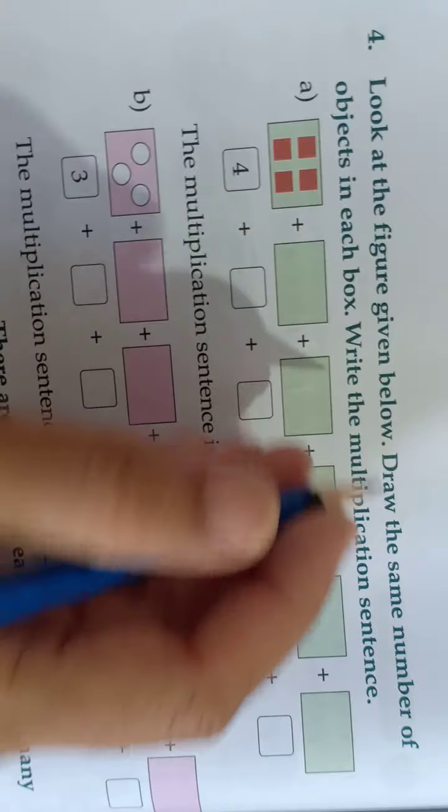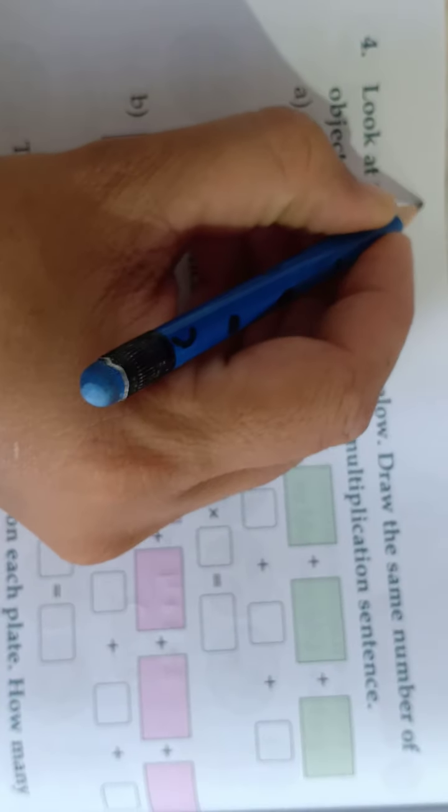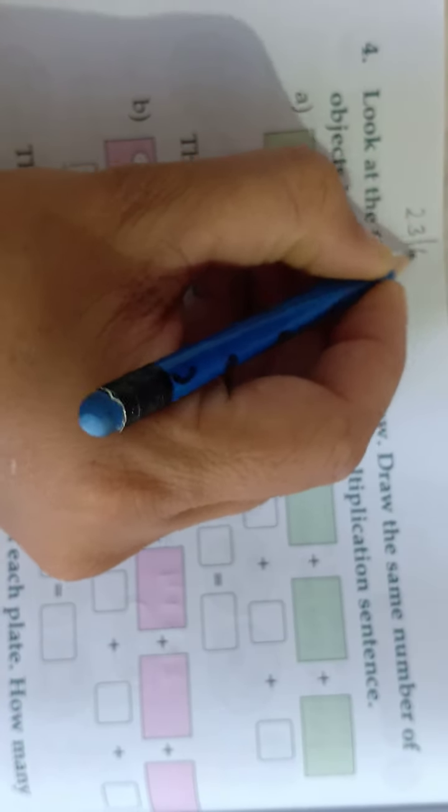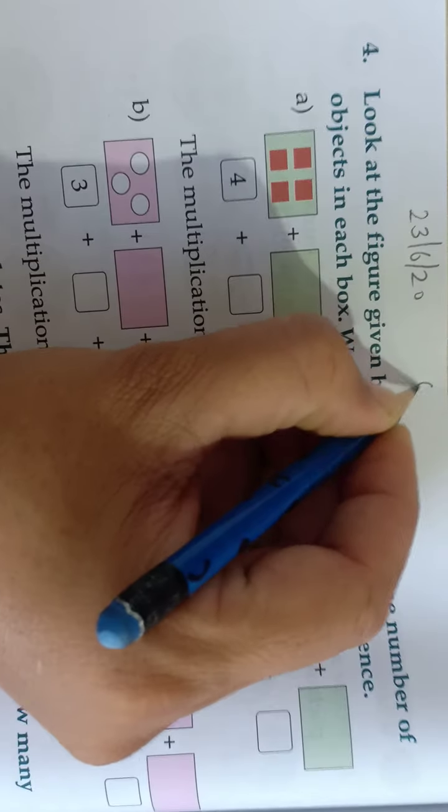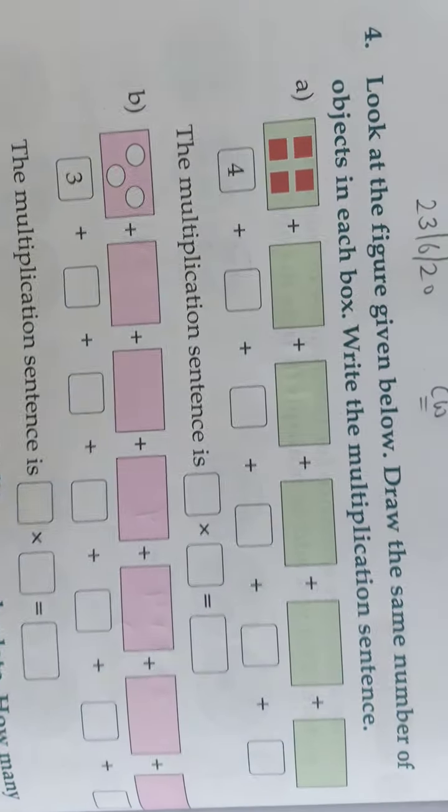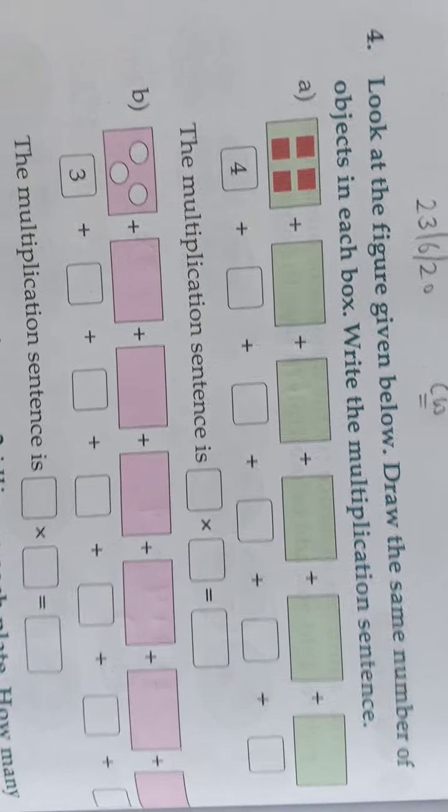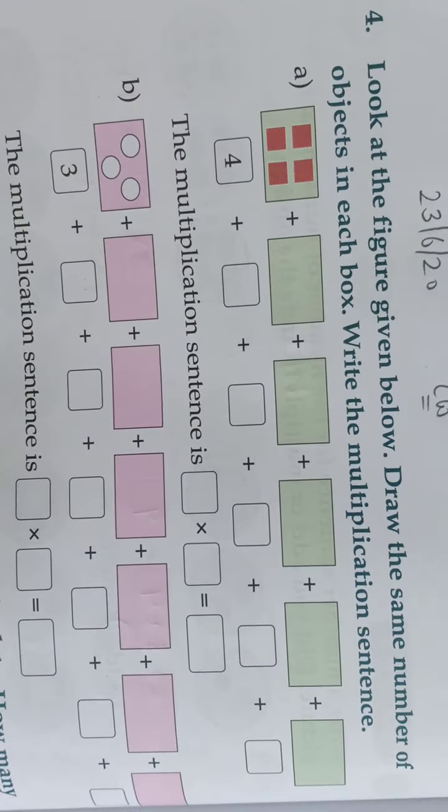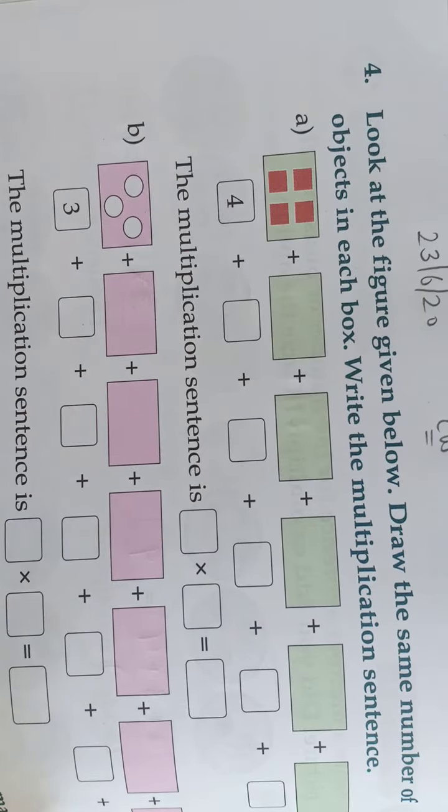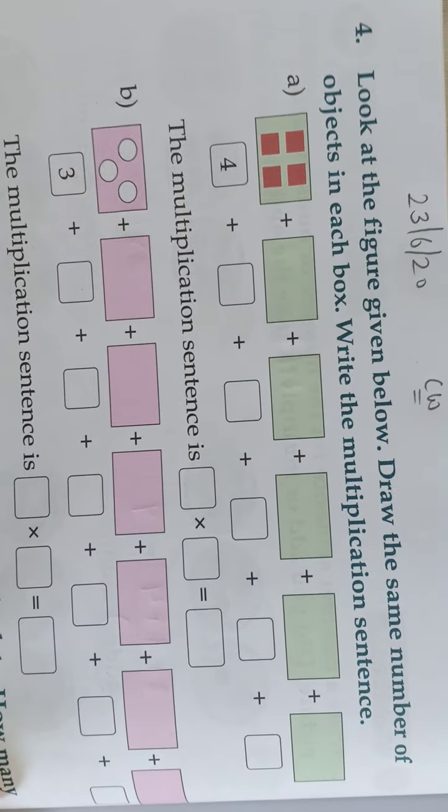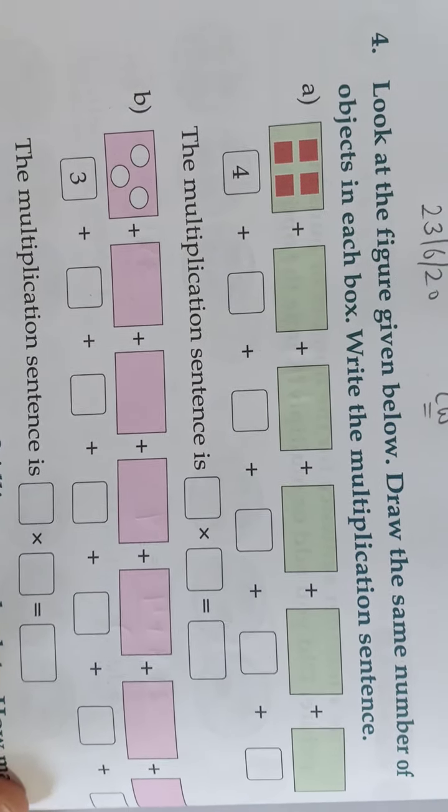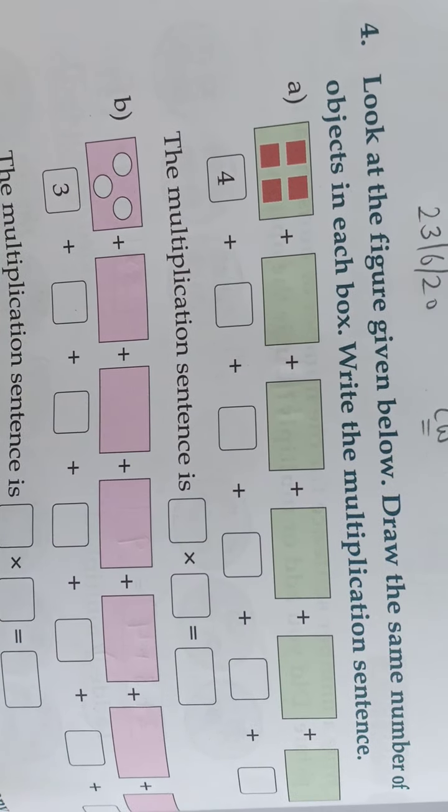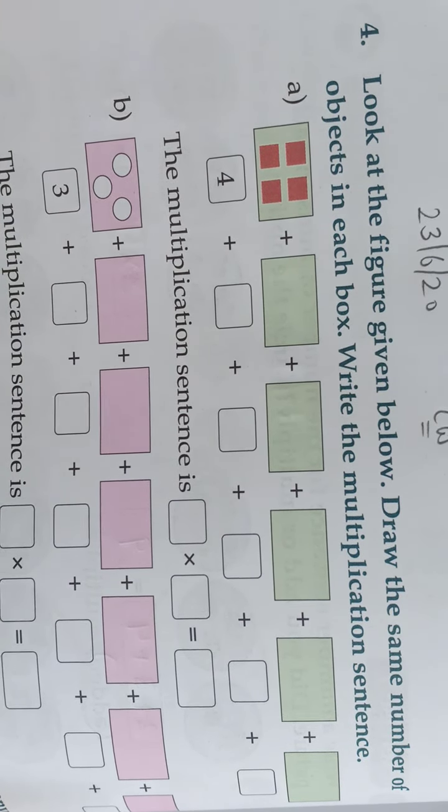Okay? And here we will write classwork and date. Let's write today's date is 23, 6, 2020 and CW. Okay? In CW, we are just understanding. So, let's start.